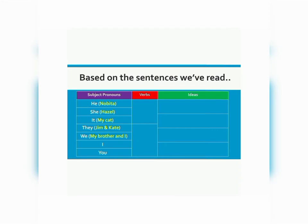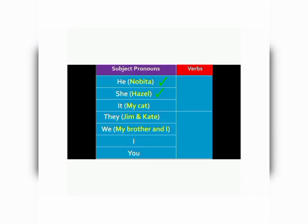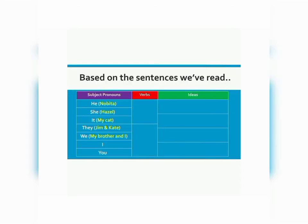He, she, it, they, we, I, and you are the basic subject pronouns. We don't always write sentences with these pronouns — we can give names. And these names are Nobita, Hazel, my cat, Jim and Kate, and my brother and I. Whenever you notice that the names used in the sentence apply with the same principle shown on this table, it means that it refers to the subject pronoun we are talking about.